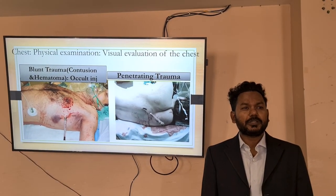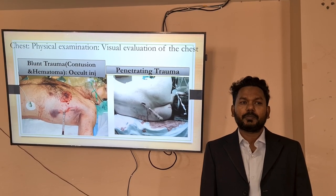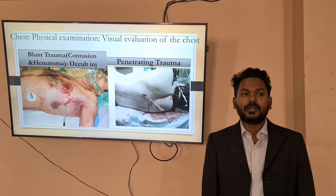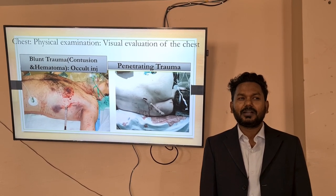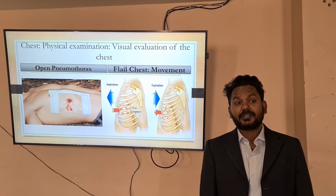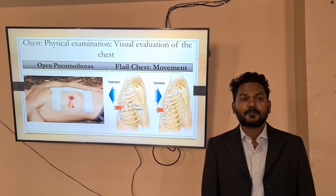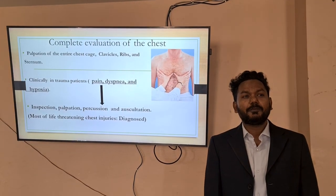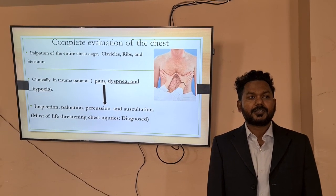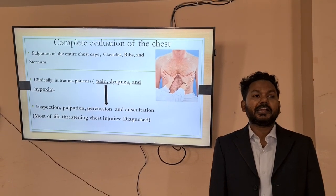A visual evaluation of the chest can reflect the type of chest trauma — blunt or penetrating. In blunt trauma, contusion or hematoma suggests the possibility of occult injury. Visual evaluation can even detect open pneumothorax or flail chest. Complete evaluation of the chest requires palpation of the entire chest cage, clavicle, ribs, and sternum.